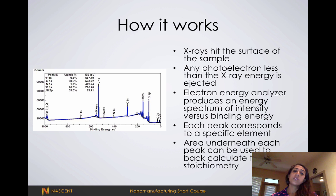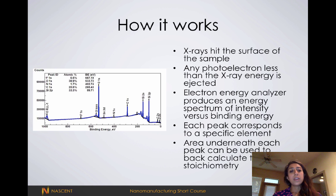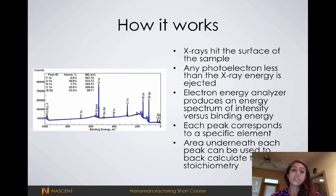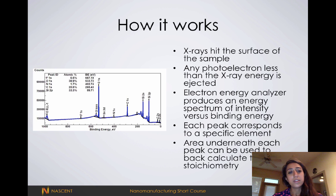The output is a spectra like the one shown on the left. You can see oxygen, tin, nitrogen, carbon, silicon, and even some fluorine on the surface of this dirty silicon wafer. We can take this spectra and analyze the area underneath each peak to derive the elemental composition or stoichiometry of the material — meaning the ratio of each element on the surface.